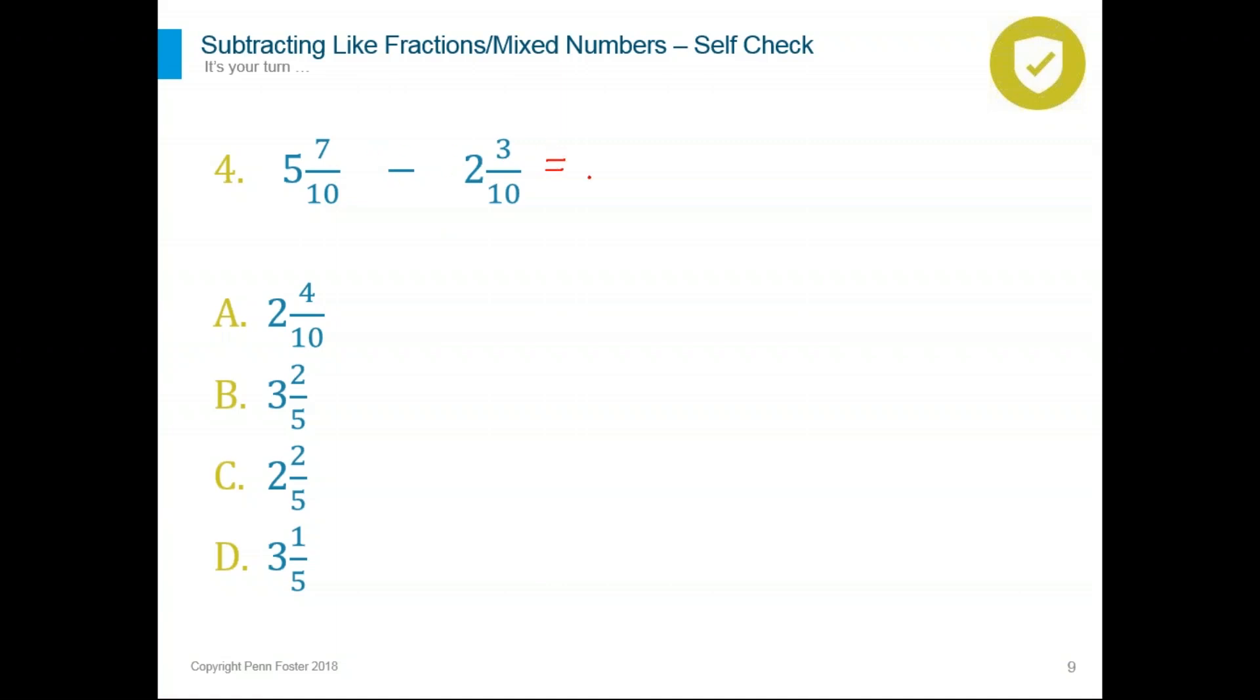So 5 minus 2 is 3. 7 minus 3 will give you the 4. 4 and then 10 will stay. 4 and 10, two even numbers. The common factor between 4 and 10 would have to be what? 2. So divide over 2, top and bottom, to simplify the fraction part. Do not divide 3 over 2. So it will be 3 and then 2 over 5. 3 and 2 fifths is the difference between these two mixed numbers. So the answer is B.